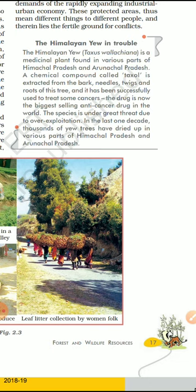The exploitation of Yarsa Gambu is so high that it faces the same problem. In China it is known as Ginseng, and it is used in traditional therapy. These are the reasons why some plants have faced extinction, and the colonial forest policy also led to the extinction of many plants.